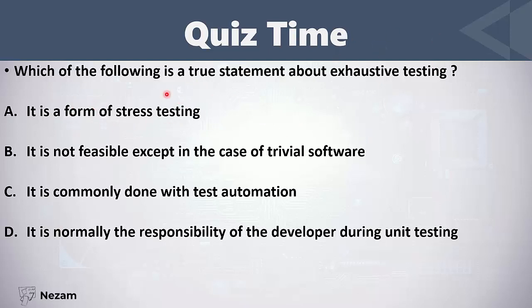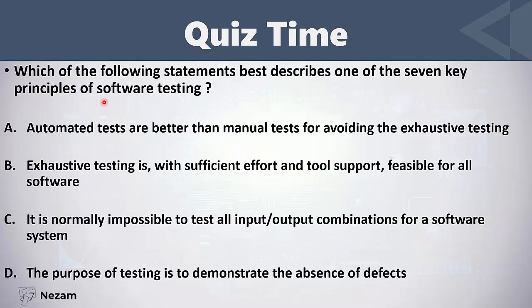Which of the following is a true statement about exhaustive testing? It is a form of stress testing — no, exhaustive testing is not a form of stress testing. It is not feasible except in the case of trivial software — correct. It is commonly done with test automation — no. Exhaustive testing is impossible; it is not feasible except in the case of trivial software.